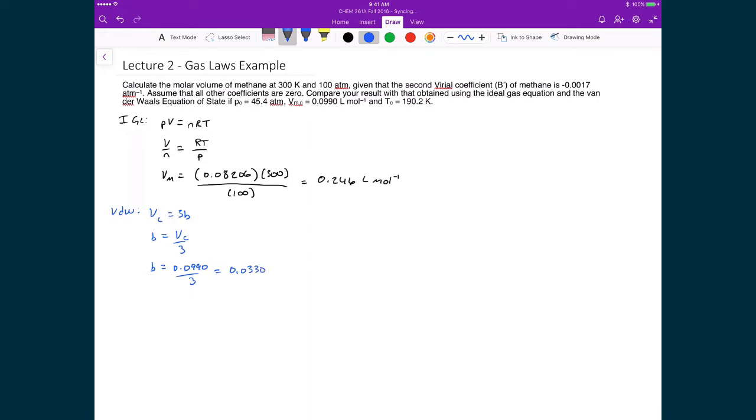I can also calculate my A constant. In this case, I'm going to use the critical pressure. And I know that that's equal to A divided by 27B squared. And so at this point, I can rearrange for A. I know A is going to be equal to 27B squared times PC times the critical pressure. I substitute in those numbers, 27 times B squared, 0.0330 squared times the critical pressure, which in this case is 45.4 atmospheres. And so then that gives me an A value of 1.335.